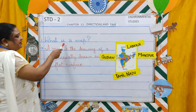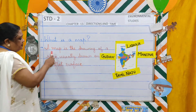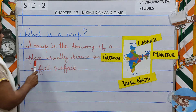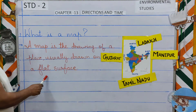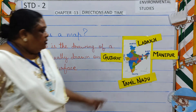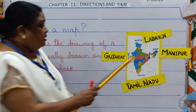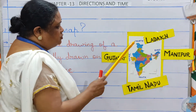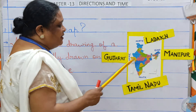What is a map? A map is the drawing of a place, usually drawn on a flat surface. Look at the map of India, children. There are the four main directions: North, South, East, and West.